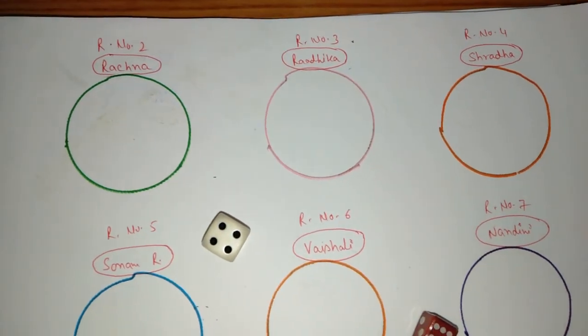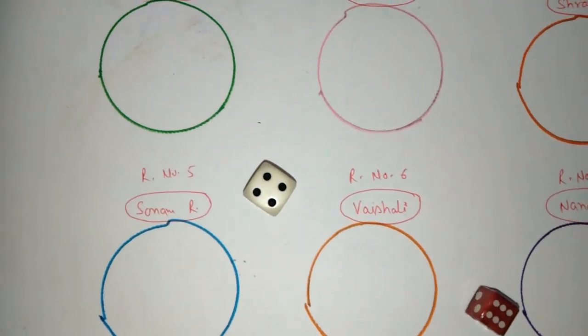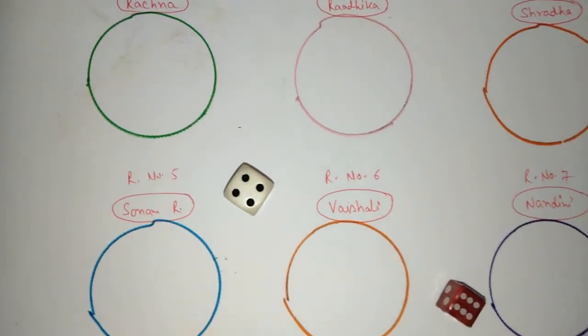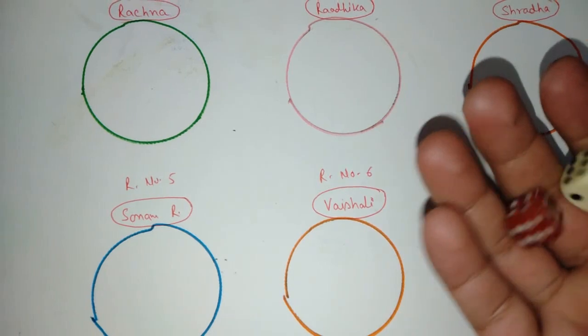Rajna, Radhika, Shraddha, Sonam, Visali and Nandini. Now let's see, we are going to play this game. We have to play these two dice. Now, let's see, we have to play one dice.